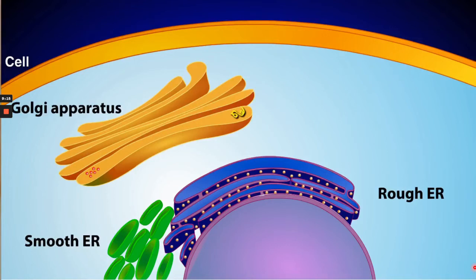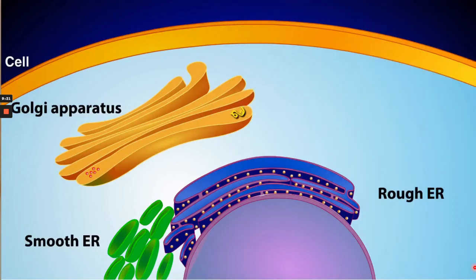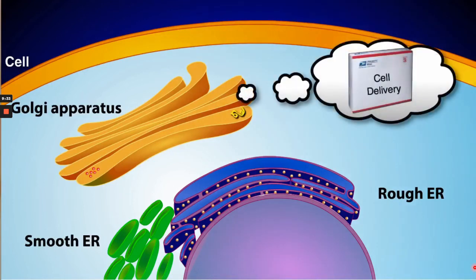The Golgi apparatus is made of a series of flattened sacs that look a little like pancakes. Its job is to package and distribute cell products that are either destined for a specific location within the cell, such as the plasma membrane, or for secretion from the cell. You can think of the Golgi apparatus as the post office of the cell, where packages are dropped off and destinations are assigned.